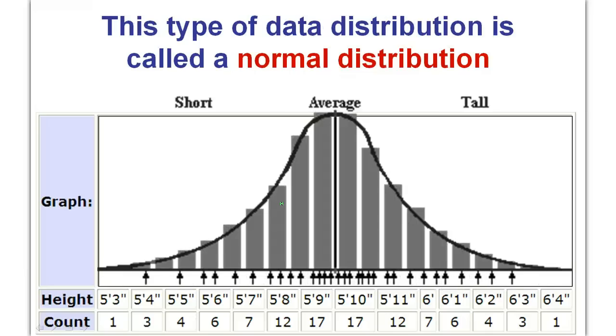So this type of curve, the formal name for it is a normal distribution. So that key word is normal. It's informally called a bell curve because of the way it sort of looks like a bell. But it's a normal distribution.